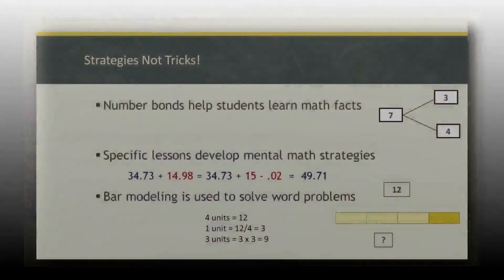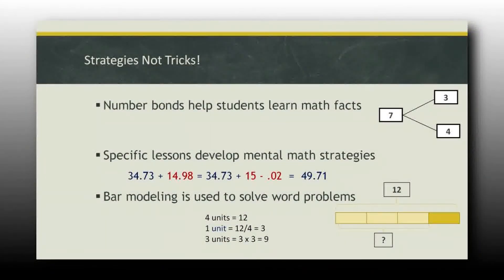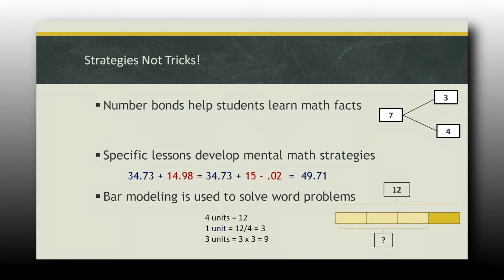So we teach kids 34.73 plus 14.98 equals what? We don't want them to write it down on their paper and borrow and carry. We want them to do it in their head. So we tell them, this 14.98 is real close to 15, right? We're just going to add this and this, and that's pretty easy to do in my head. Three is four and nine, so that's 49.73.